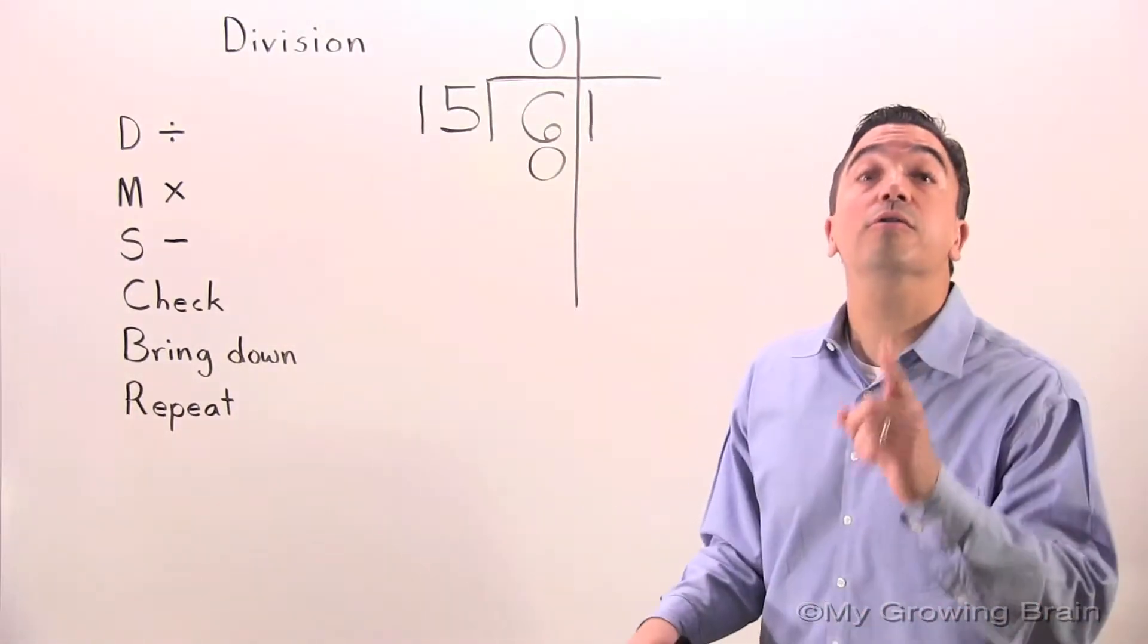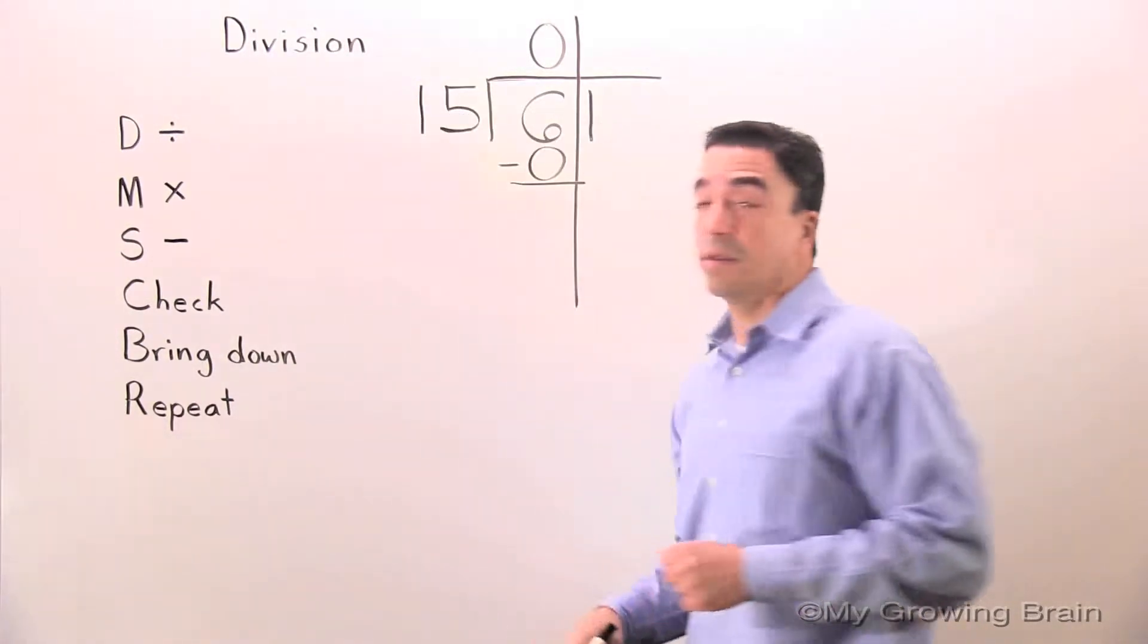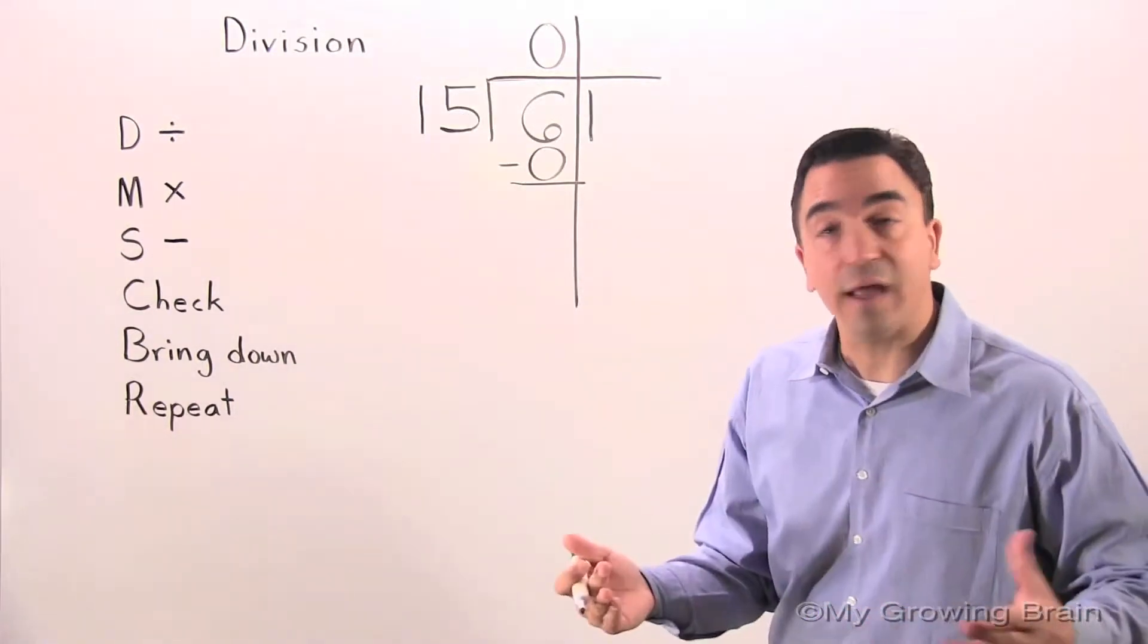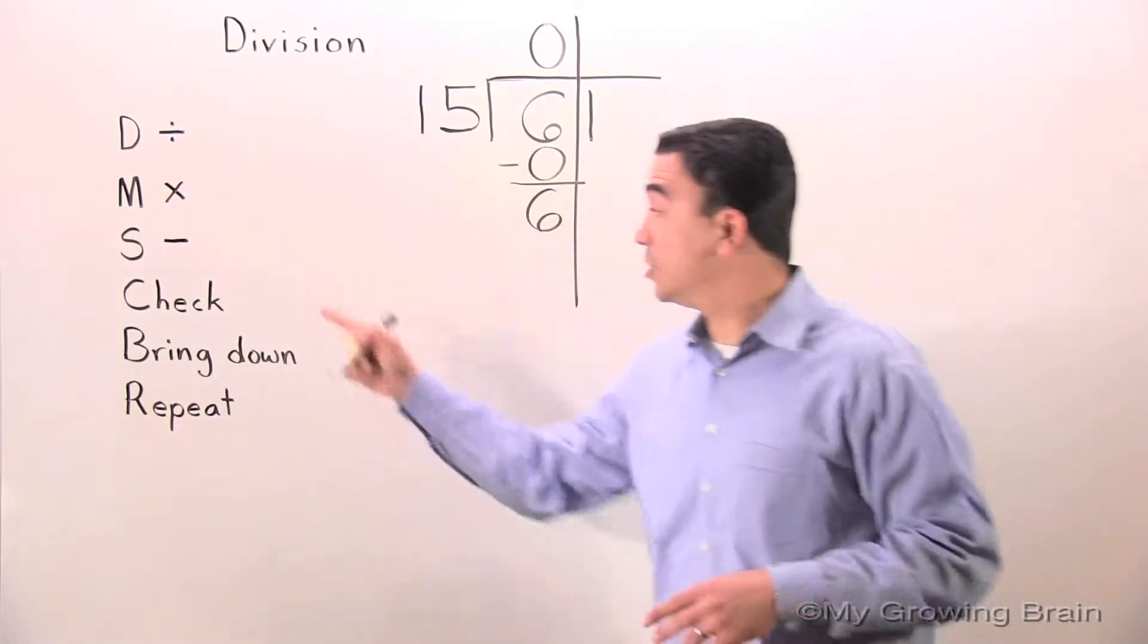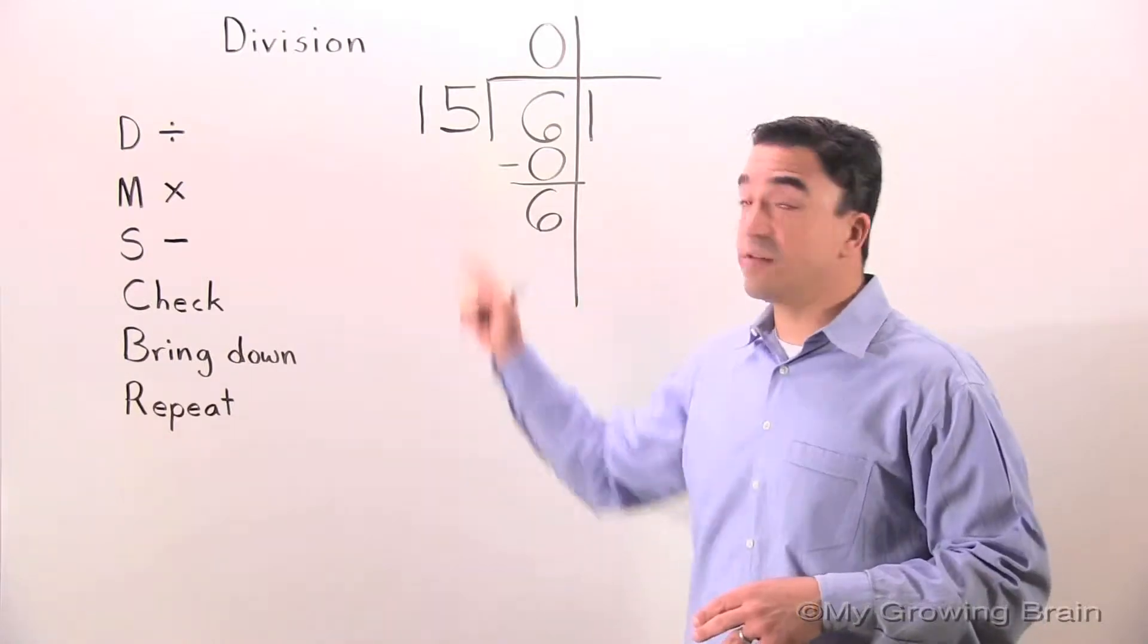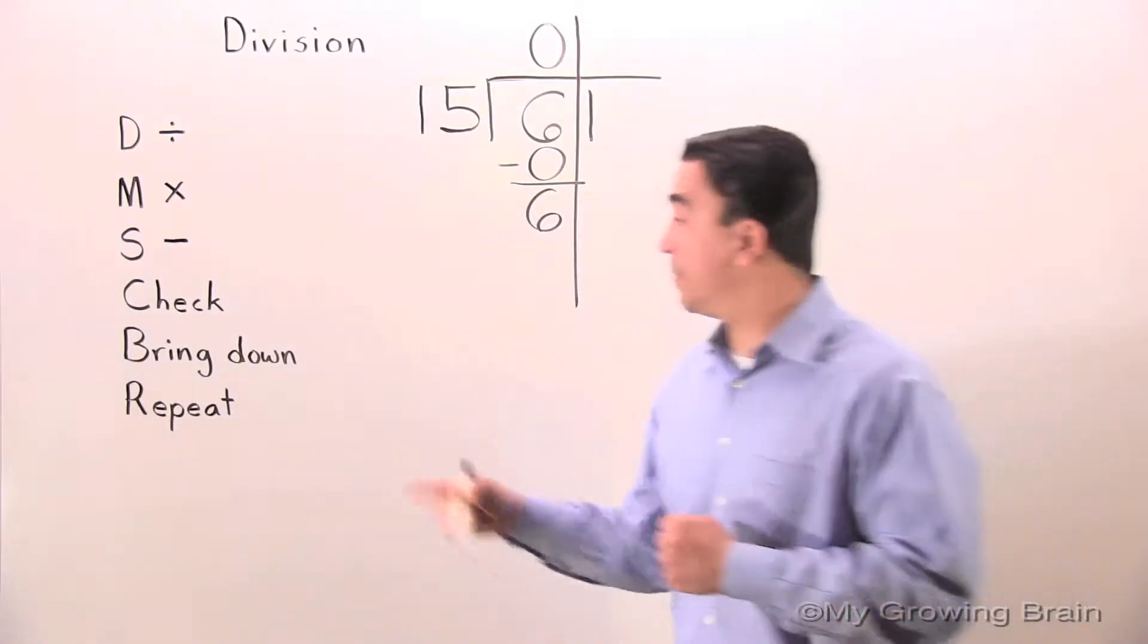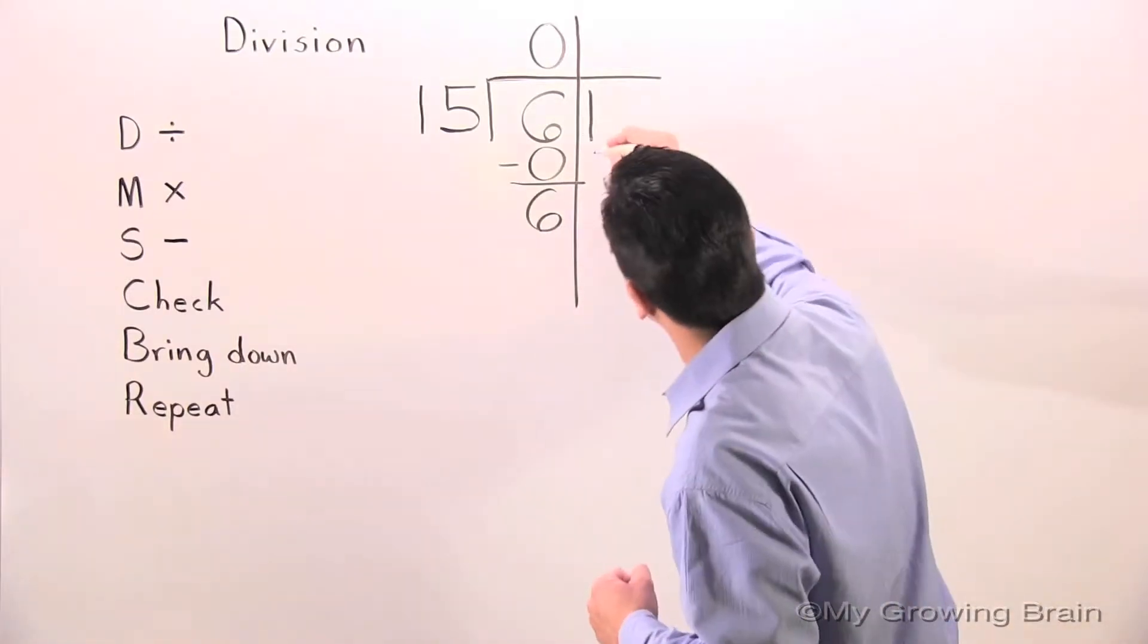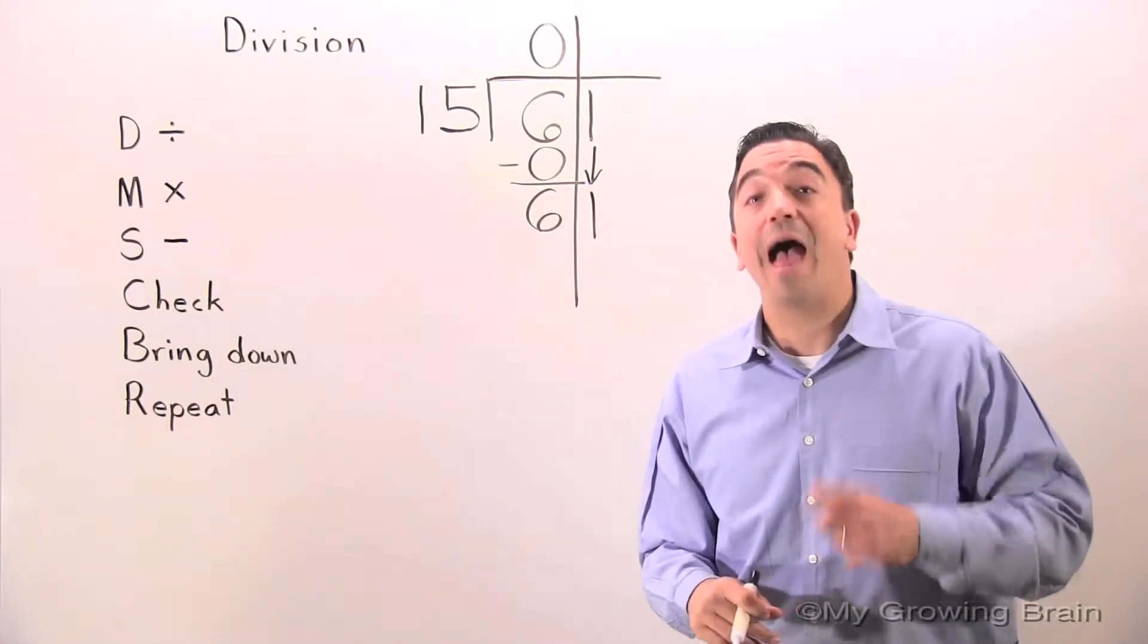Next step, subtract: 6 minus 0 equals 6. Next step, check: 6 is less than 15, keep on going. Next step, bring down.